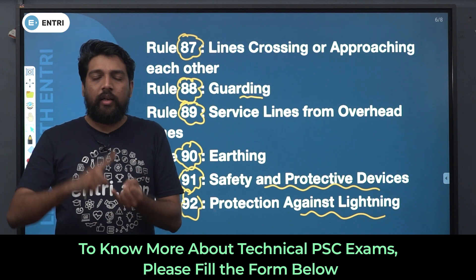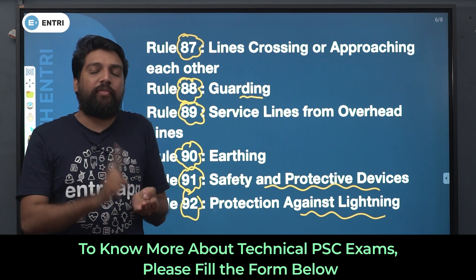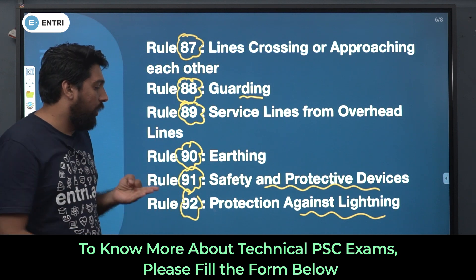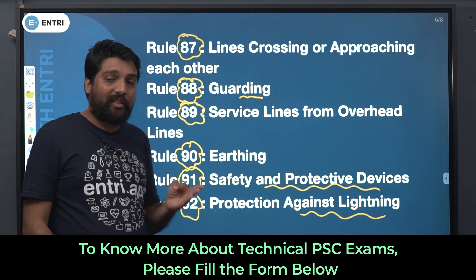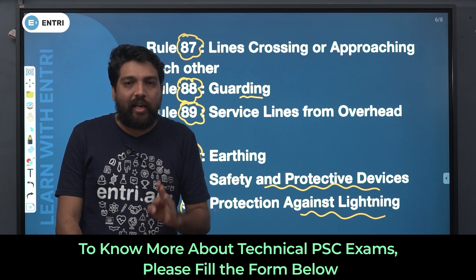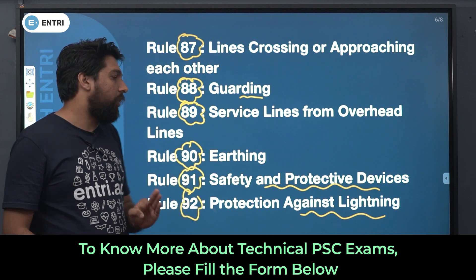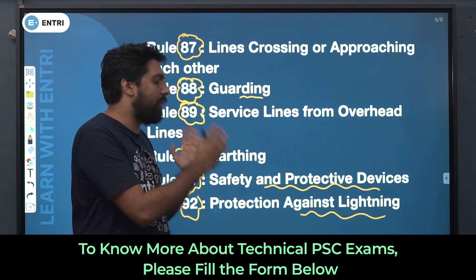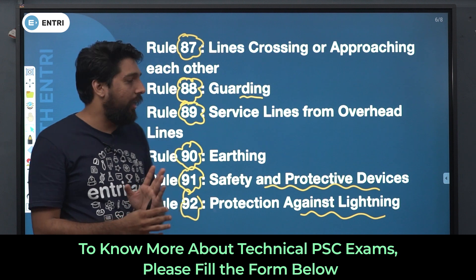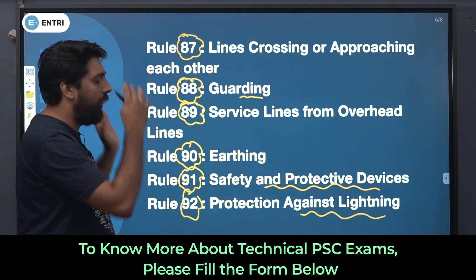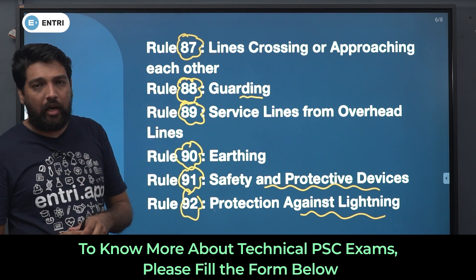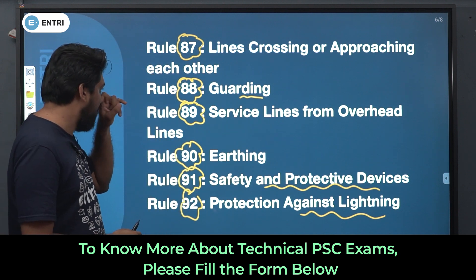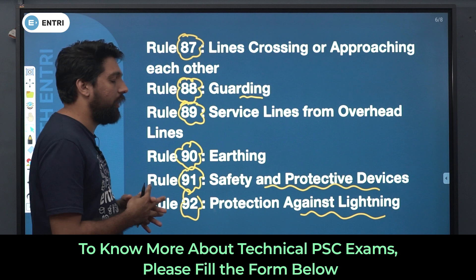Rule 91 is about safety and protective devices. Rule 92 is protection against lightning. Rule 89 is important if you are looking at service lines and overhead lines, and lines closing or approaching.